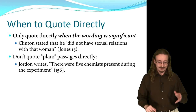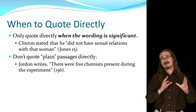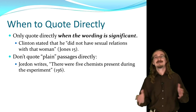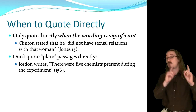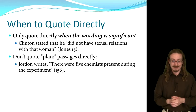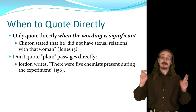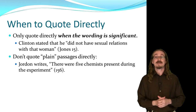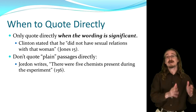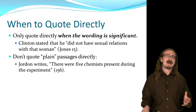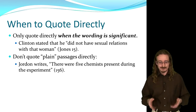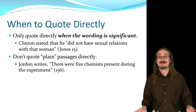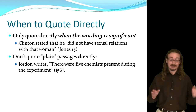When should you quote directly? There's only one reason to quote directly and that is if the wording is significant somehow. You'll see politicians or lawyers use this — they'll say 'this person said, and I quote,' and give the exact wording because there's something significant about it. For example: 'Clinton stated that he "did not have sexual relations with that woman."' Obviously if you wanted to talk about that situation, it might help to know the exact wording rather than paraphrasing it. Sometimes that person's words are significant and that's when you quote. You don't quote passages if there's nothing significant about the wording — for example, 'Jordan writes, "there were five chemists present during the experiment."' Nobody cares about that wording — what you really should do is put it in your own words. You'll still have the citation, but you don't need the exact wording.